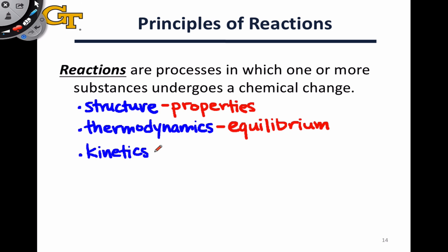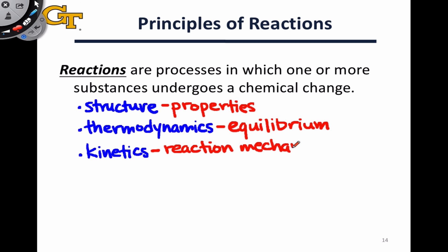The third major area is kinetics. We've learned how to describe the speed of chemical reactions, and most relevant to the molecular level, kinetics tells us something about reaction mechanisms — that is, how reactions occur at the molecular level. These three areas are hugely important to chemistry, but particularly kinetics and thermodynamics require that we're given a chemical reaction.